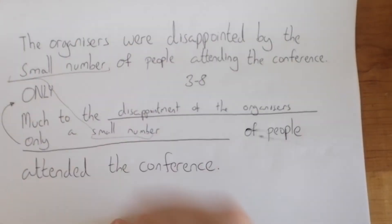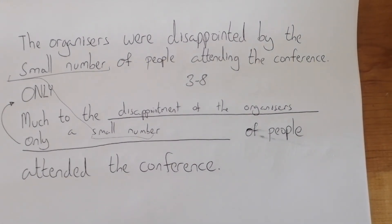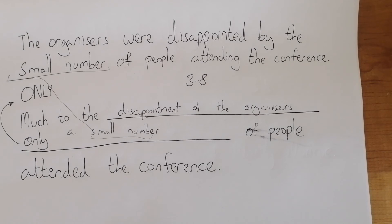Please don't use 'amount.' Don't say 'the amount of people.' You've got to say 'the number of people' because 'amount' is for uncountable nouns and 'number' is for countable nouns. For example, 'I was disappointed by the number of people,' 'the number of cars,' or 'the amount of water' or 'the amount of sugar in his coffee.'